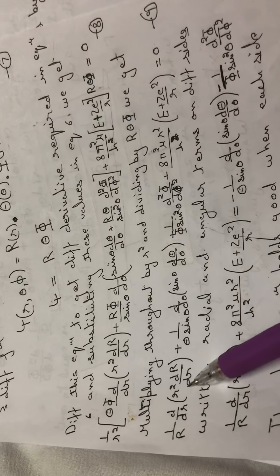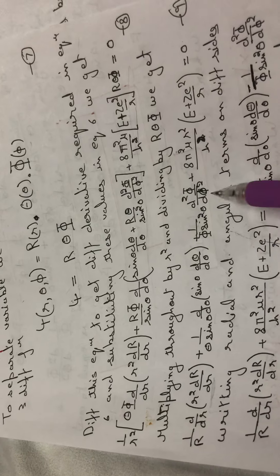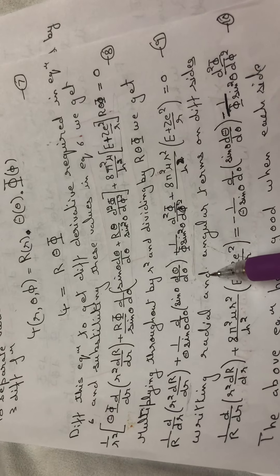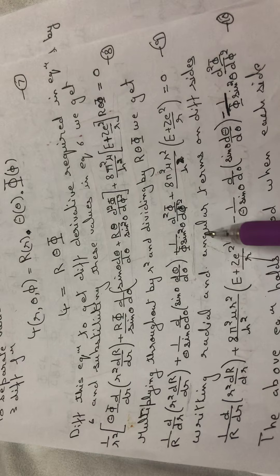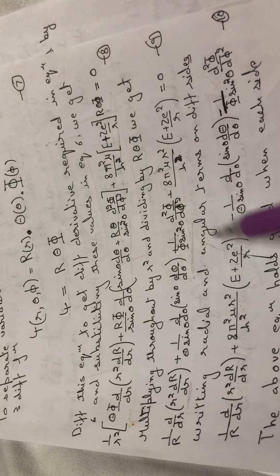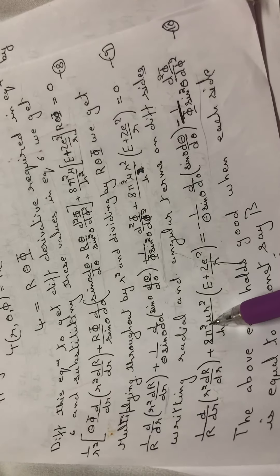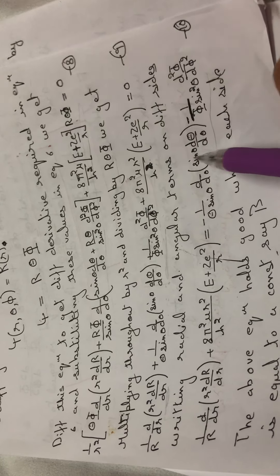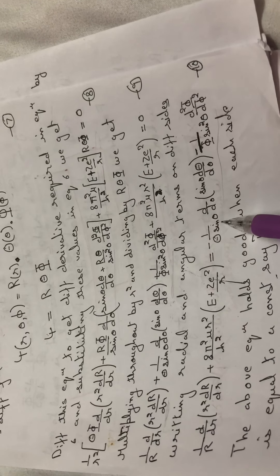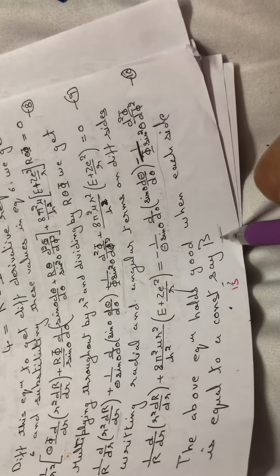The term containing only r is the radial part, and the two terms containing θ and φ together form the angular part. Writing the radial and angular terms on different sides of the equation, we note this equality holds only when both sides are individually equal to some constant — let that constant be β.